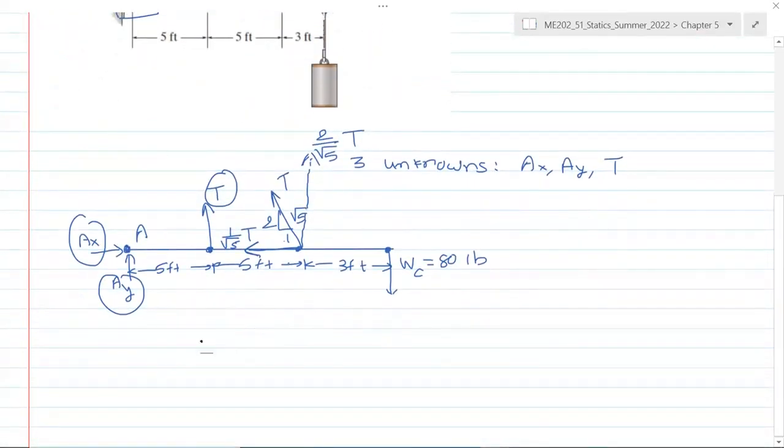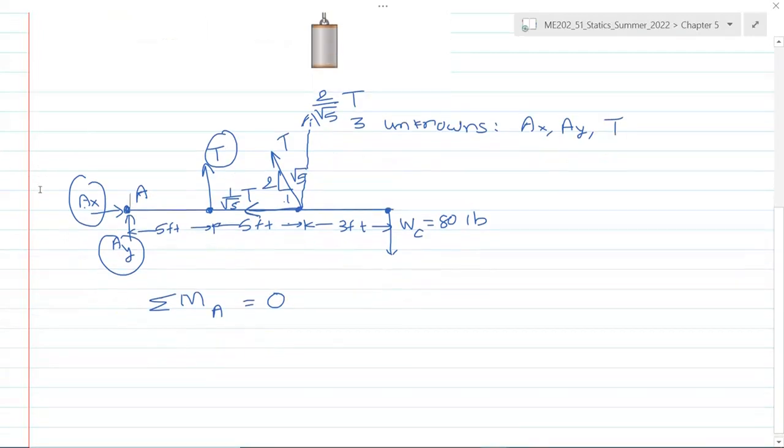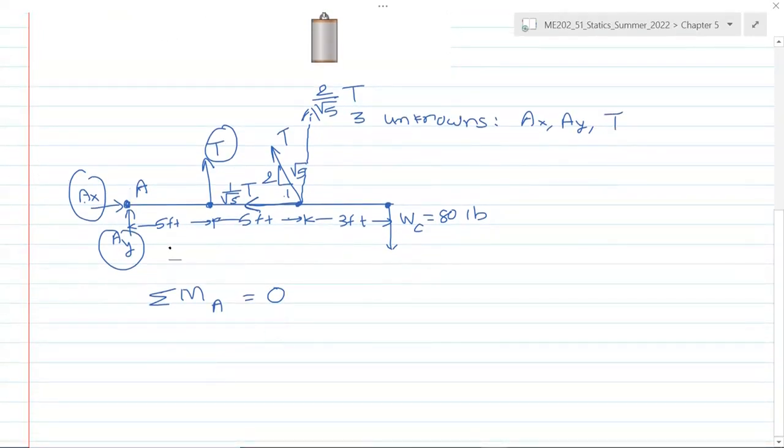First step is let's apply sum of moments at A equals zero. We have selected this point A because when we do that, then the moment of Ax and Ay about A is zero because both these forces pass through that point. Remember that when a force passes through a point, its moment about that point is zero. To take that advantage to eliminate two unknowns, we have intentionally written the sum of moments equation about A.